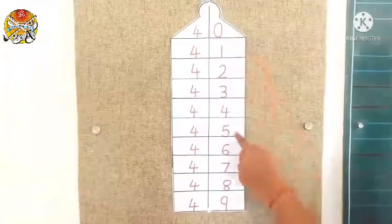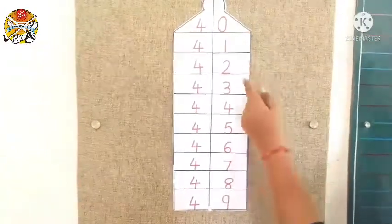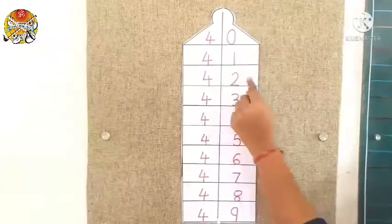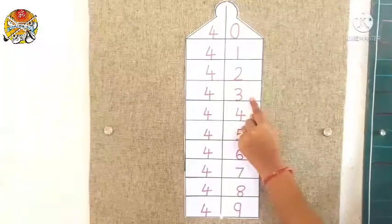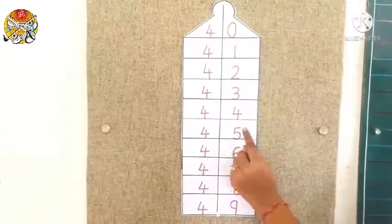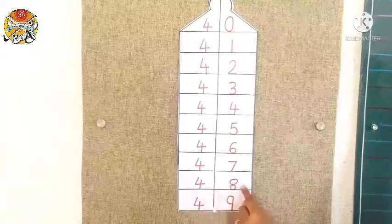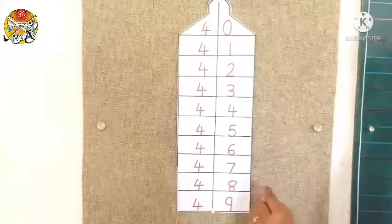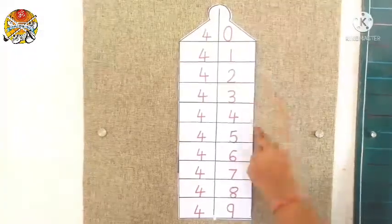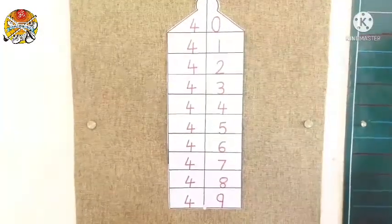See this is house of 40's. So tell me which numerals come in this house? Let's see. Numerals 41, 42, 43, 44, 45, 46, 47, 48, 49. Yes, numerals 41 to 49 come in this house. So now let's learn how to write these numerals in house of 40's.